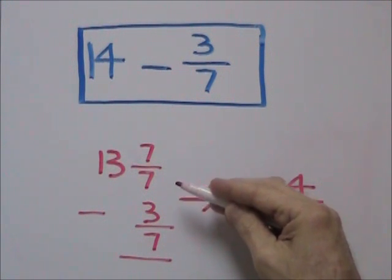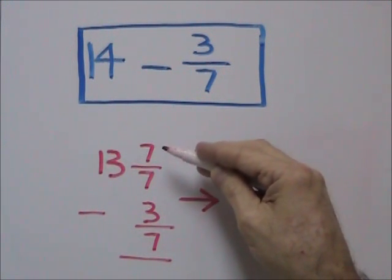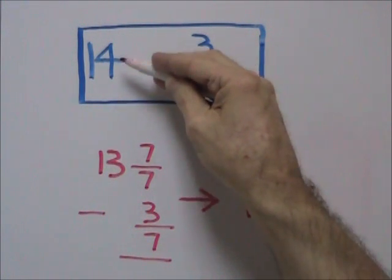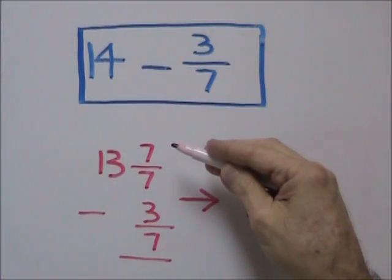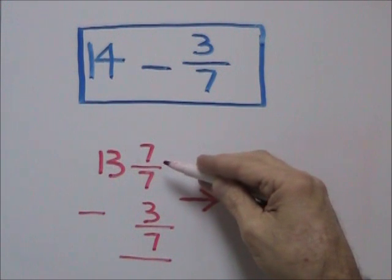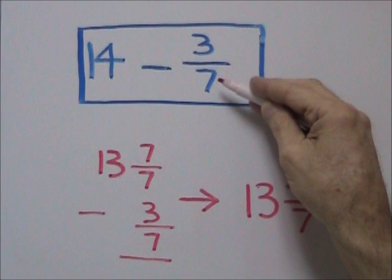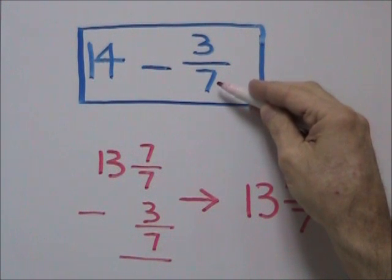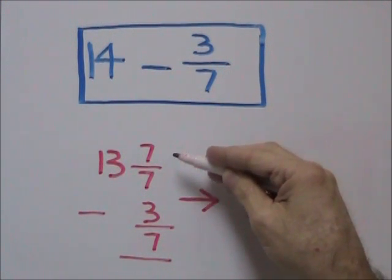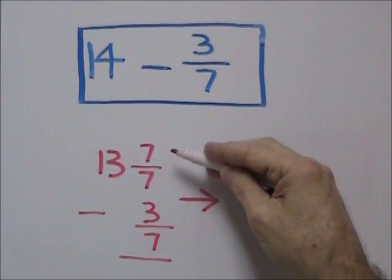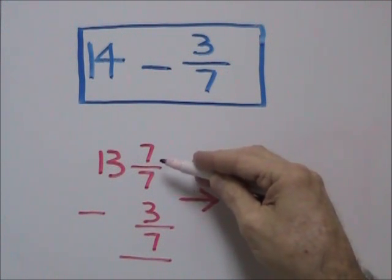What we have to do is find a fraction that has an equal value to 14. We do this by writing 13 and 7 sevenths. We use the 7 from the denominator of our fraction to create a value of 1 in fraction form, 7 sevenths, which makes one whole.